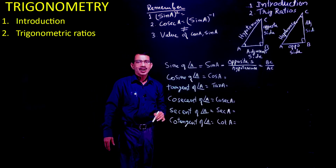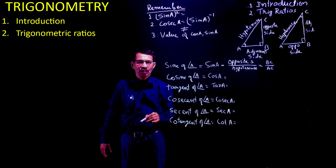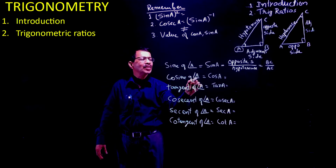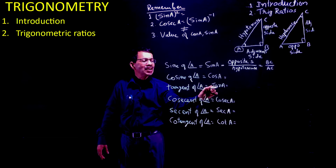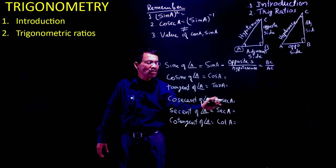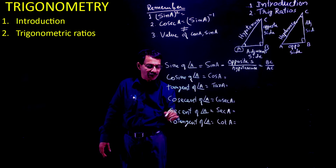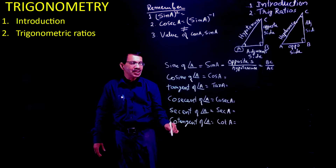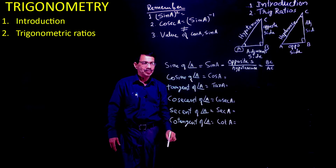Now let us come to the different trigonometric ratios. The first trigonometric ratio is sine of angle A, written as sin A. Then cosine of angle A, written as cos A. Next is tangent of angle A, written as tan A. Next is cosecant of angle A, then secant of angle A, and the last one is cotangent of angle A, written as cot A. So we have: sin A, cos A, tan A, cosec A, sec A, and cot A.